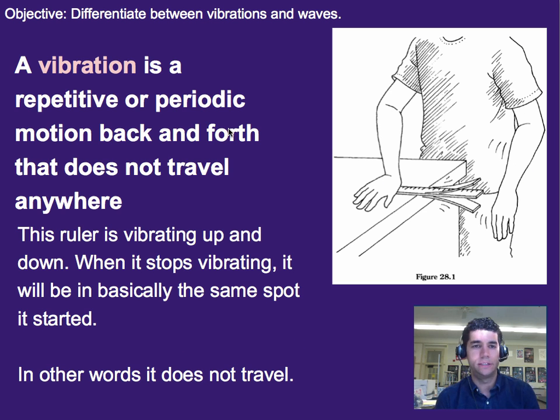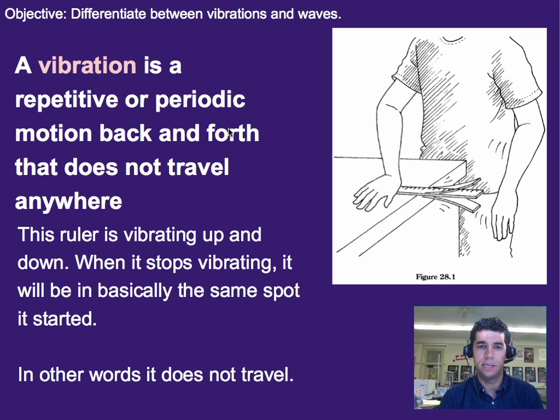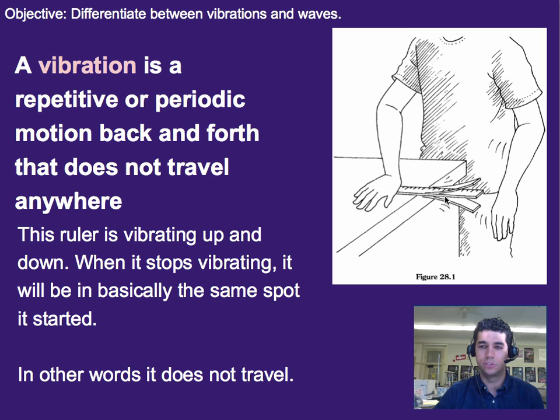A vibration is a repetitive or periodic motion back and forth, and the key here is it doesn't travel anywhere. So it helps if we think of an example, such as a ruler.